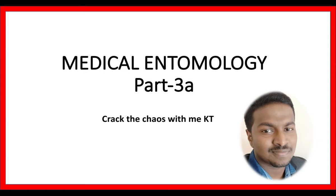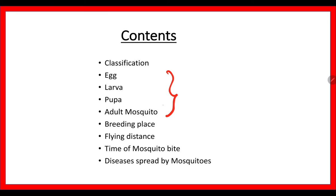If you have not subscribed to the channel, do subscribe for more interesting videos like this, and don't forget to press the bell so that you will receive daily video notifications. In this video, we will see about the classification of arthropods and the four important stages in the life cycle of a mosquito — egg, larva, pupa, and adult mosquito identification — as well as the breeding place, flying distance, and time of mosquito bite, and diseases spread by mosquitoes.